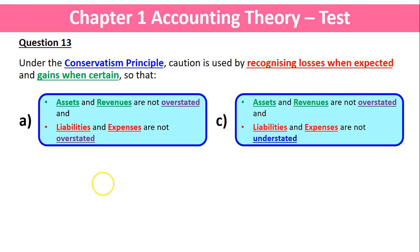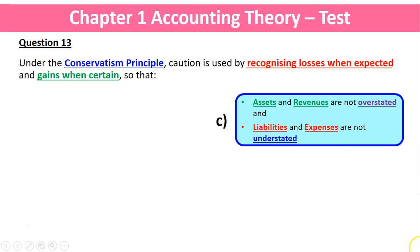So how are A and C similar and different? Both say we apply conservatism so assets and revenues are not overstated — that's the same. The difference is option A says liabilities and expenses are not overstated, which doesn't sound right. What sounds better is that liabilities and expenses are not understated — that's option C. So we get rid of option A and go with option C.